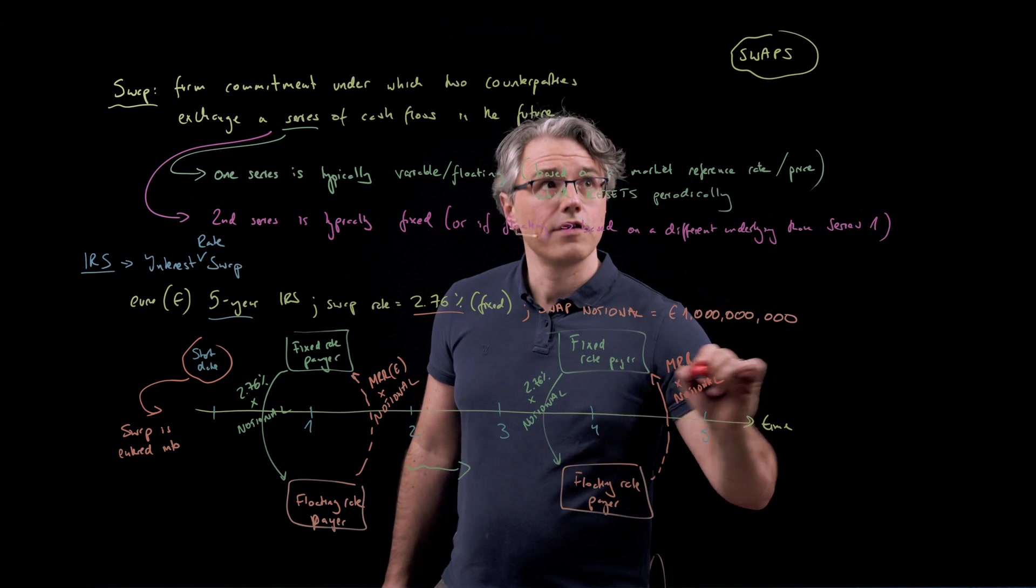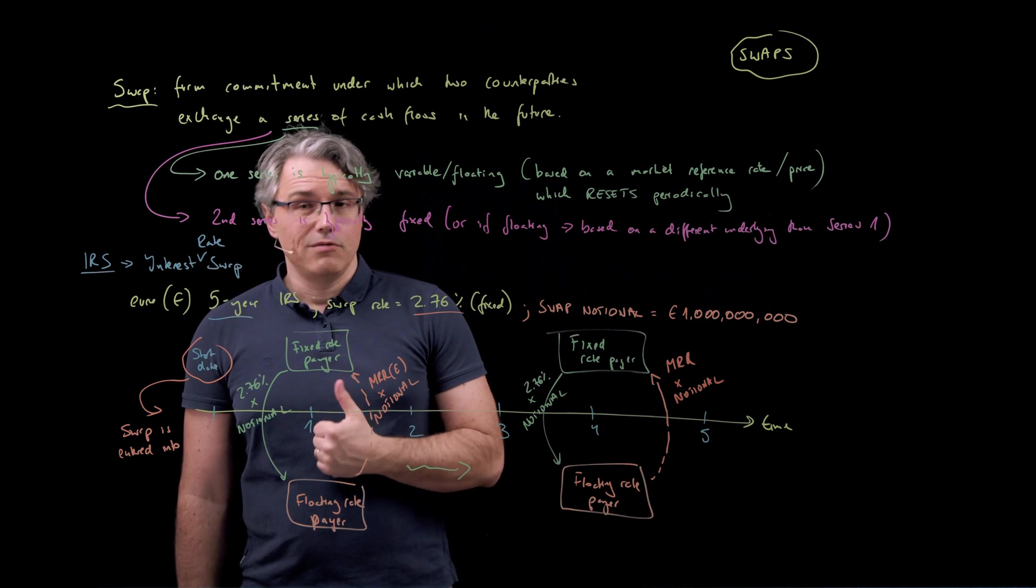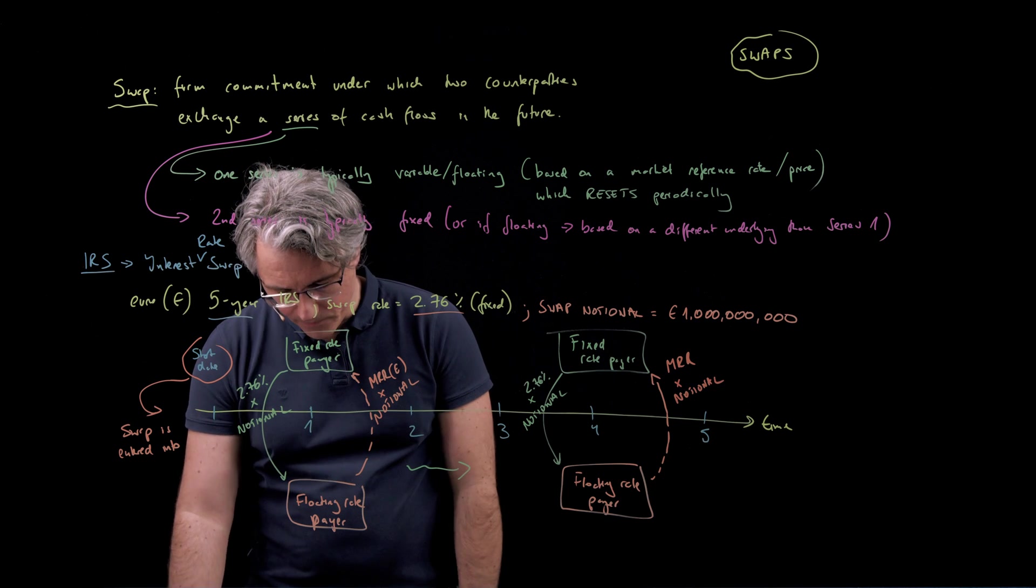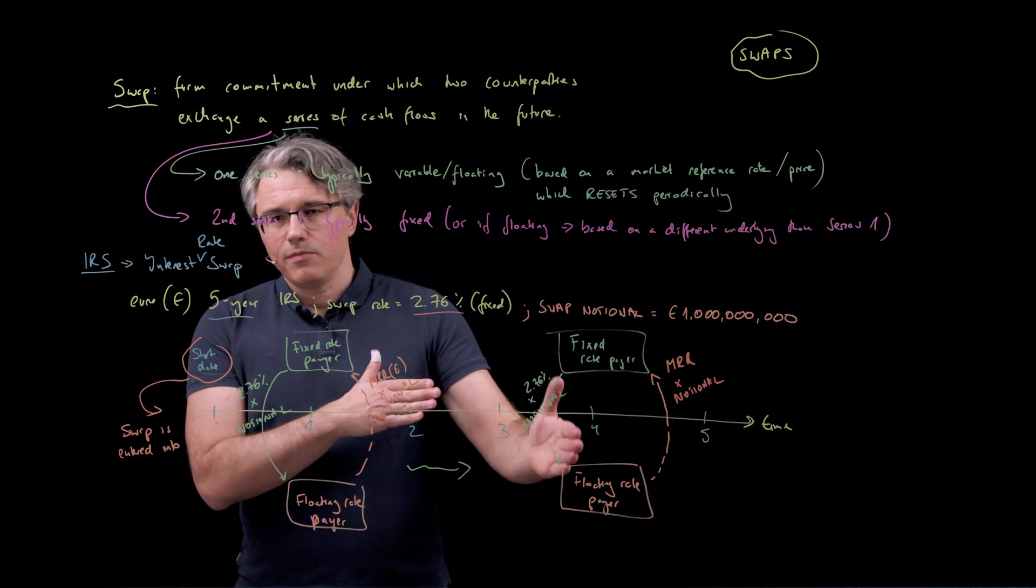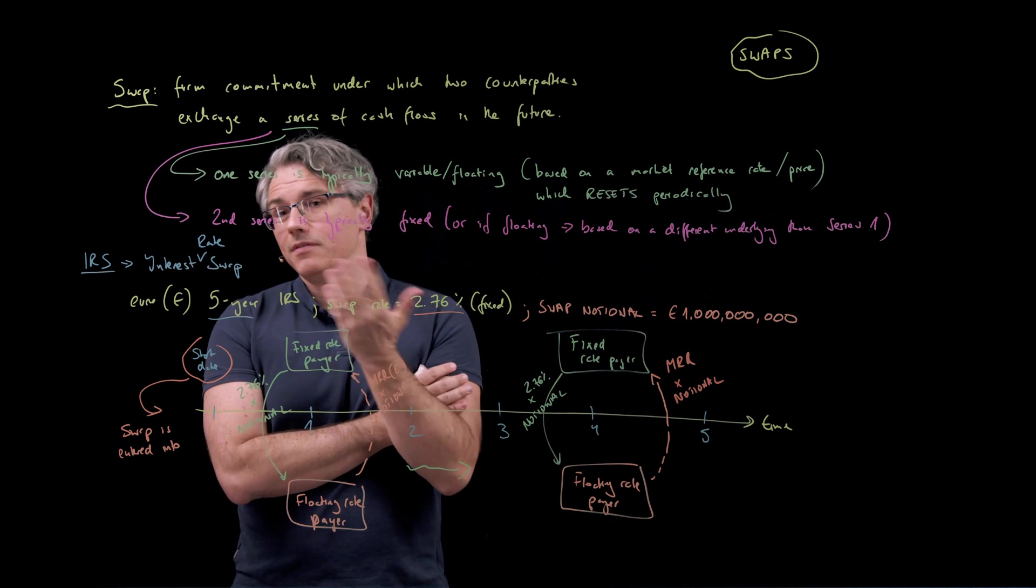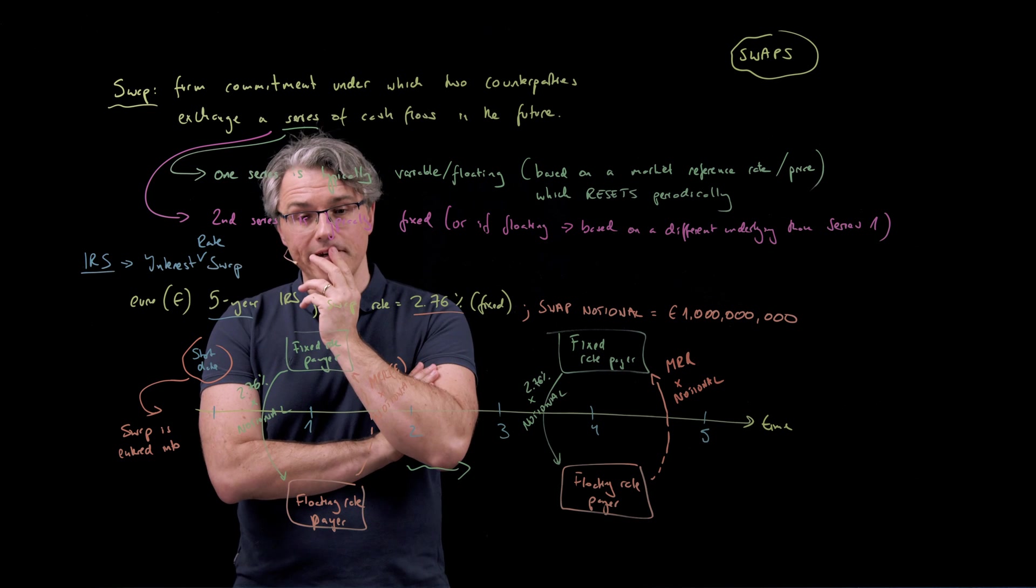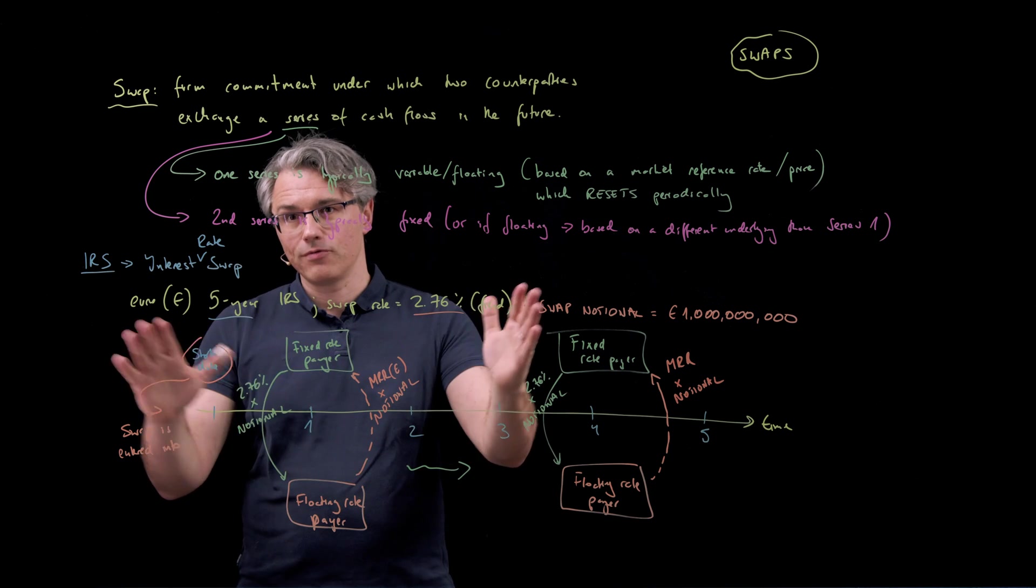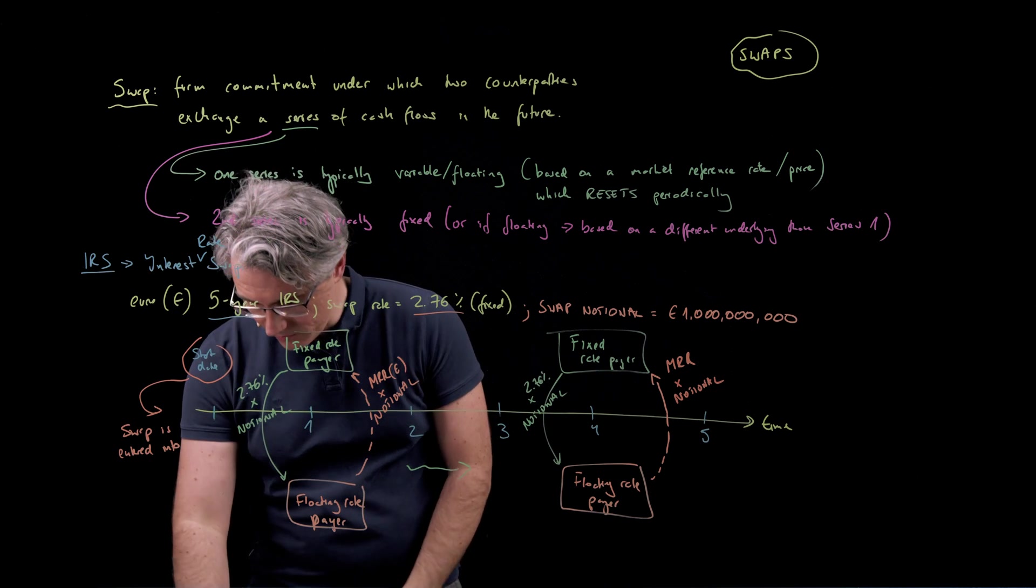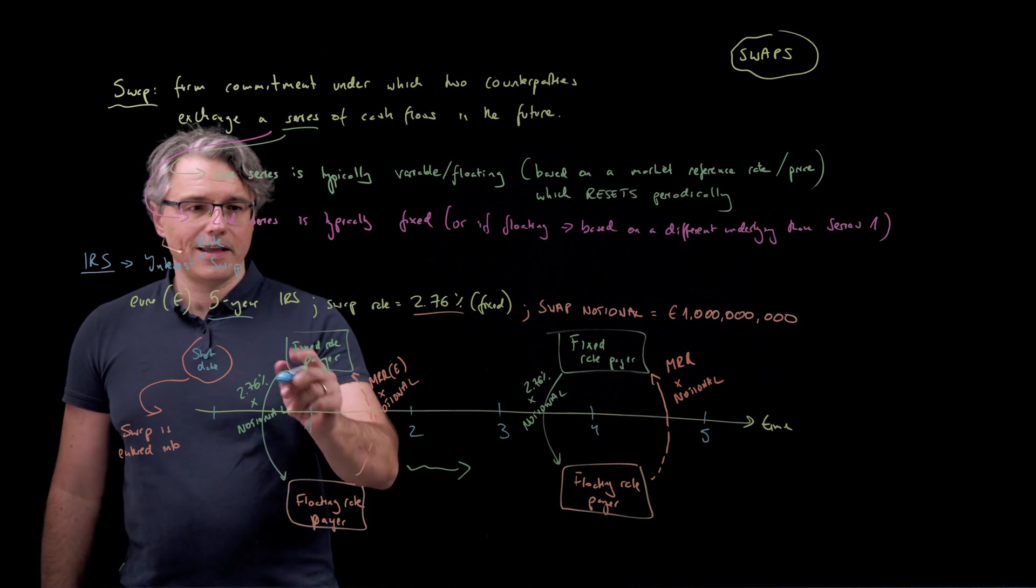So first of all, we don't have a single settlement date. We have multiple settlement dates. I'm showing you an example where payments happen annually, but if they happen more frequently, then scaling is necessary. We would scale the interest rates down to a quarterly or whatever period. Interest rates are typically expressed in annual terms, so they need to get scaled.